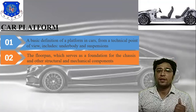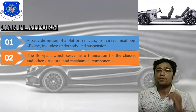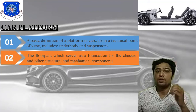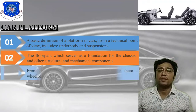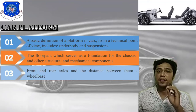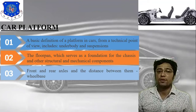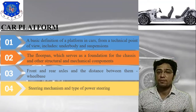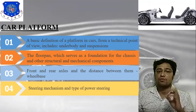The second aspect is the floor plan, which serves as a foundation for the chassis and other structural and mechanical components. Here you can find the external elements — four wheels, steering system, chassis, frame, and seating arrangement — but not the main car body. The third aspect is the objective: the front and rear axle and the distance between them, which is the wheelbase, define the car platform segment.